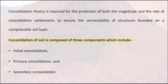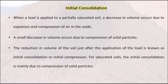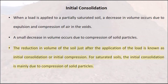Consolidation of soil is composed of three components: initial consolidation, primary consolidation, and secondary consolidation. Initial consolidation: when a load is applied to a partially saturated soil, a decrease in volume occurs due to expulsion and compression of air in the voids. A small decrease in volume also occurs due to compression of solid particles. The reduction in volume of the soil just after the application of the load is known as initial consolidation or initial compression. For saturated soils, the initial consolidation is mainly due to compression of solid particles.